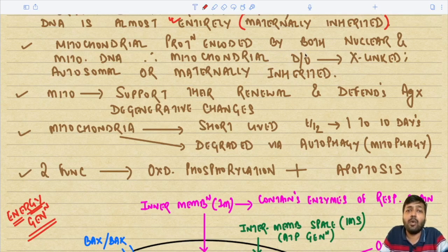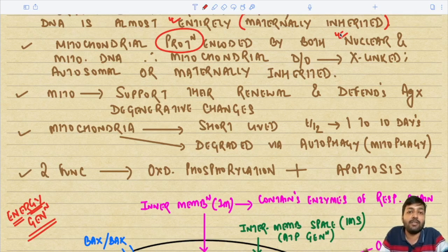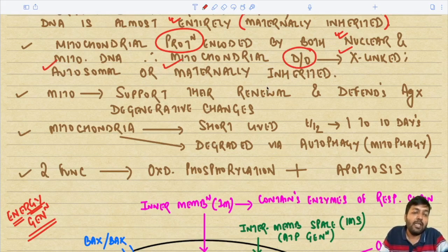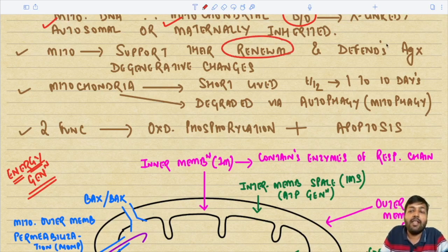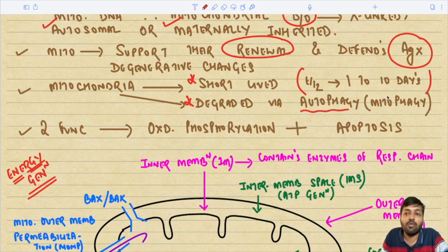Mitochondrial proteins are encoded by both nuclear DNA and mitochondrial DNA. Whatever proteins are present inside the mitochondria, they are encoded by both the nuclear DNA of the entire cell and the DNA present inside the mitochondria itself. Therefore, mitochondrial disorders can be X-linked, autosomal, or maternally inherited. Mitochondria also support their own renewal and defend against degenerative changes. They are quite short-lived, with a half-life of 1 to 10 days, and are degraded mainly via autophagy, also known as mitophagy.